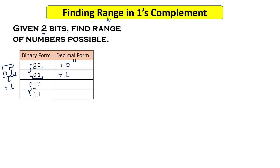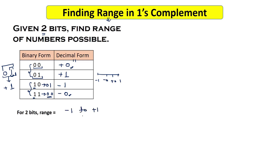For the negative two-bit numbers with MSB 1: 10 flipped gives 01, which is 1, so 10 represents minus 1. And 11 flipped gives 00, which is 0, so 11 represents minus 0. Just like sign-magnitude, we get two representations of zero: plus 0 and minus 0. Placing on the number line: minus 1, minus 0, plus 0, plus 1 — so for two bits, the range is minus 1 to plus 1, with four total values.